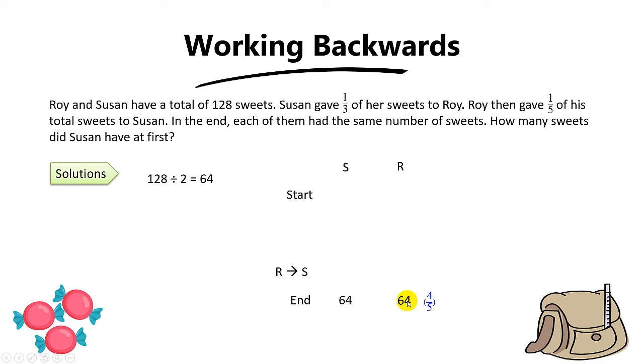In other words, this 64 over here represent four-fifths of his sweets. So to work backwards, you divide by four times five, you will get 80 sweets. So in other words, before Roy gave one-fifth of his sweets to Susan, he will have 80 sweets.